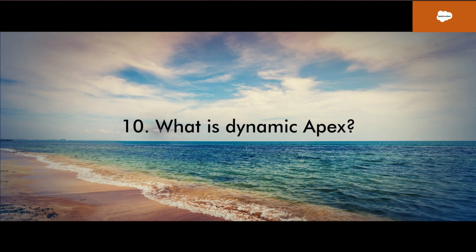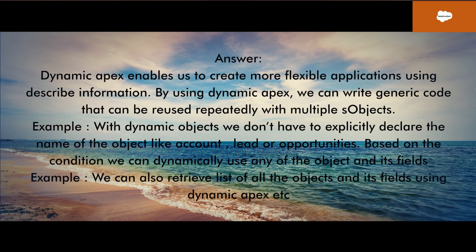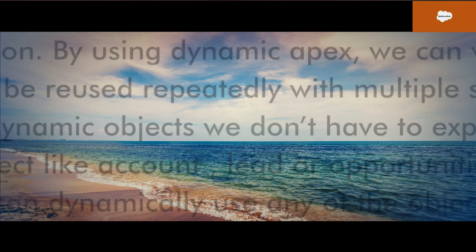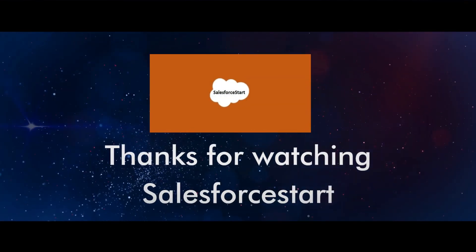Question 10: What is dynamic Apex? Dynamic Apex enables us to create more flexible applications using describe information. By using dynamic Apex, we can write generic code that can be reused repeatedly with multiple sObjects. With dynamic objects we don't have to explicitly declare the name of the object like Account, Lead, or Opportunities — based on the condition we can dynamically use any object and its fields. We can also retrieve a list of all the objects and their fields using dynamic Apex. Thanks for watching Salesforceistart.